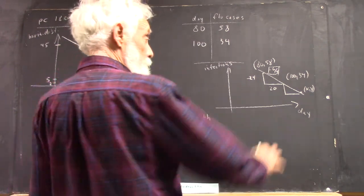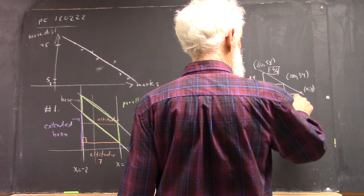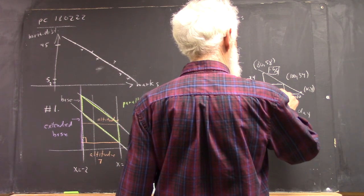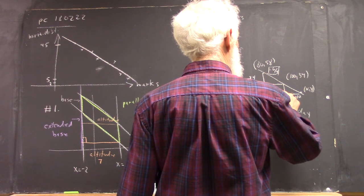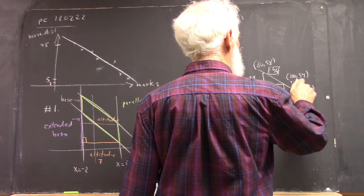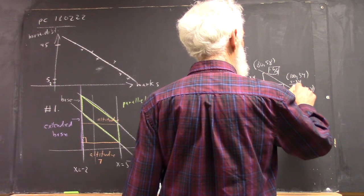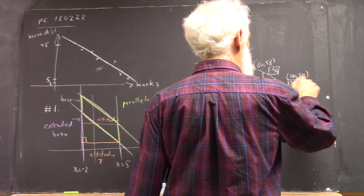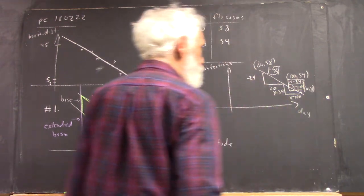Might be a little hard to read, but you know what I'm doing. And then here you've got x minus 100 and y minus 34. So the slope here is y minus 34 over x minus 100. And I apologize for having written this too small. We put a box around it.